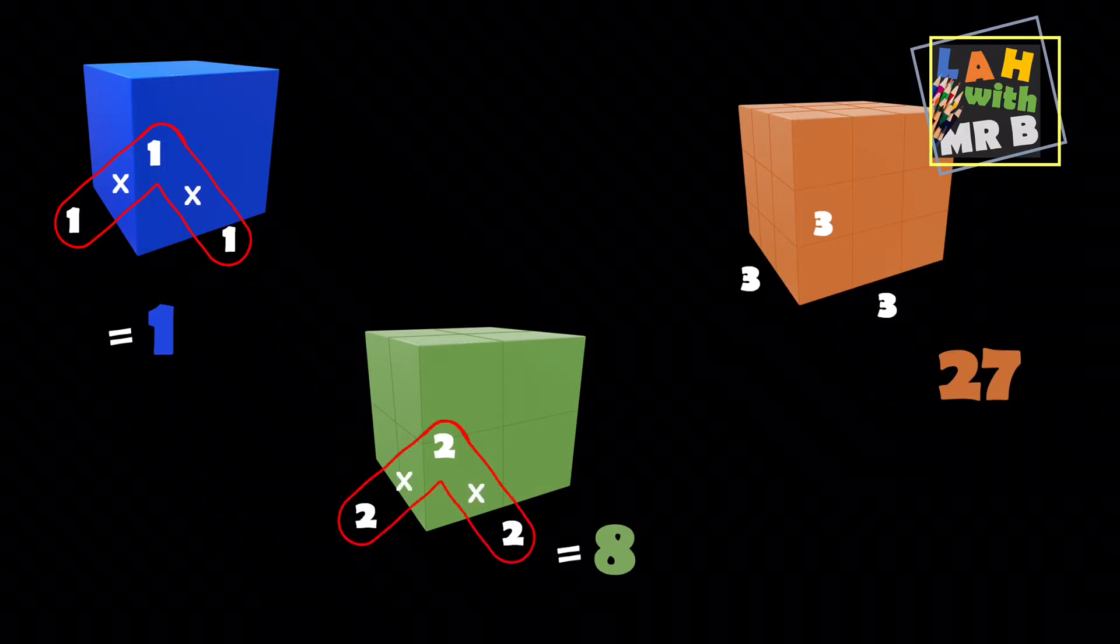So for the second one, we've got two, and we're multiplying it by two, and then we're multiplying it by two again. So two times two is four, and then multiply that by two again, and that gives us eight. So two cubed is eight.